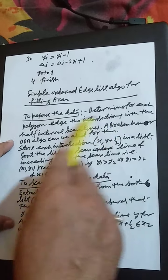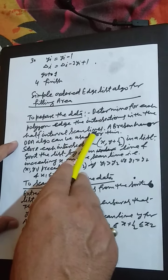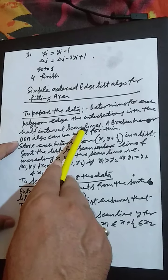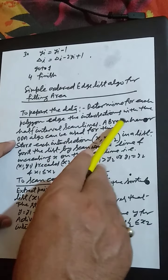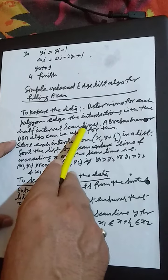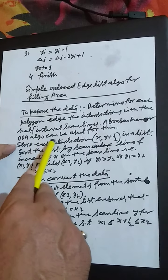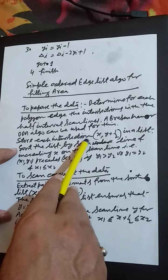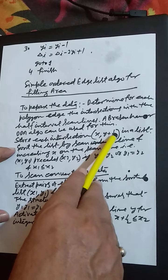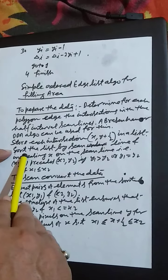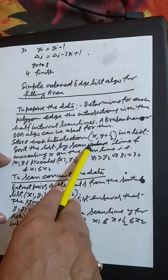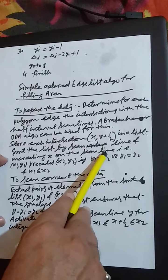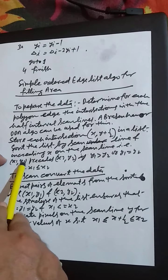The first step of this algorithm is to prepare the data. Determine for each polygon the intersections with the half interval scan lines. Scan lines are horizontal lines. A Bresenham or DDA algorithm can be used for this. Store each intersection X comma Y plus half in a list.